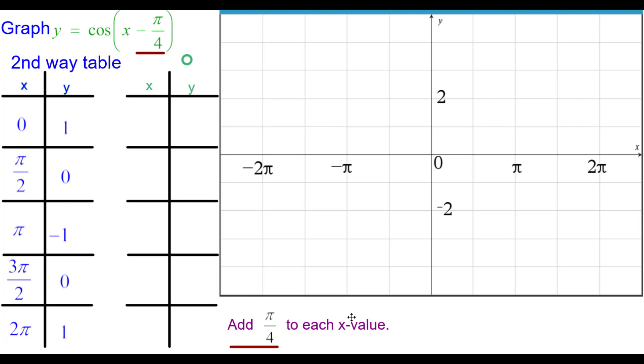Nothing's happening to the y values, so the y values will remain the same. So we'll start by adding pi over 4 to 0 and getting pi over 4. Keeping the y coordinate the same, we'll plot over (pi over 4, 1).